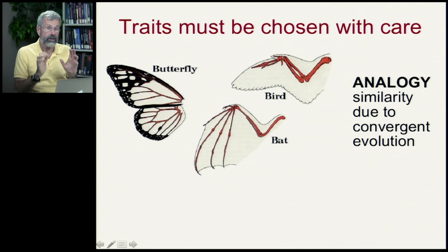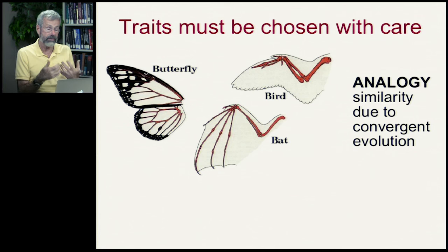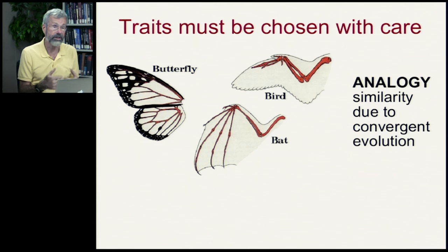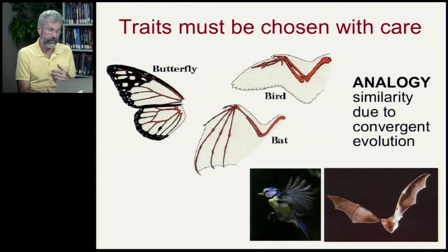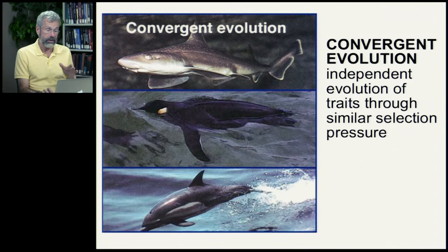This introduces another key term: analogy. These are analogous structures. They're similar, but they're similar because of convergent evolution — the need to solve the same problem. Birds and bats both have wings, but not because of common ancestry.